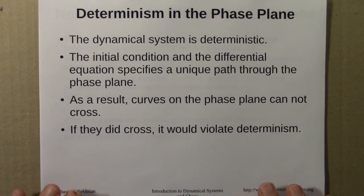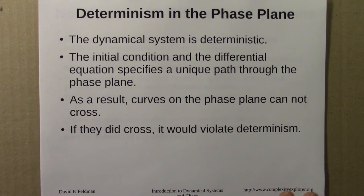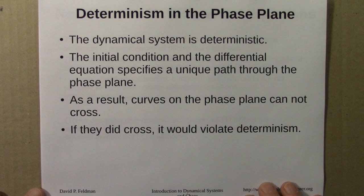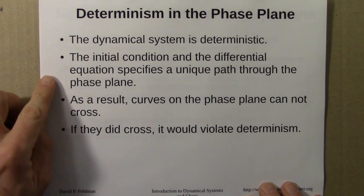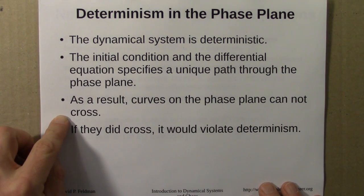Then we talked about the consequences of determinism in the phase plane. The dynamical system is deterministic. It's just a rule that tells how r and f, or x and y, whatever they are, change in time. Another way of saying that is that the initial condition and the differential equation specify a unique path through the phase plane. If I tell you the starting point and the rule, there's one and only one solution to the equation.